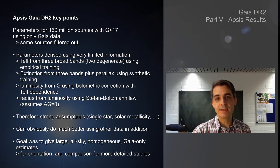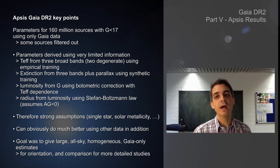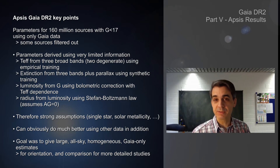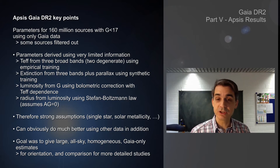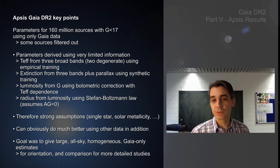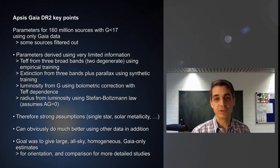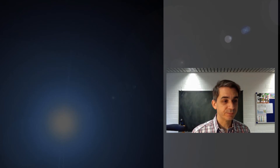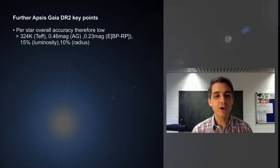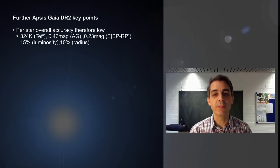This is really intended as a baseline for comparison if you want to obtain much better estimates using other data in addition to the Gaia data, and it can also be used for source selection. But because of the strong assumptions made with very limited data and the degeneracy in extinction and temperature, the overall accuracy is not that high.